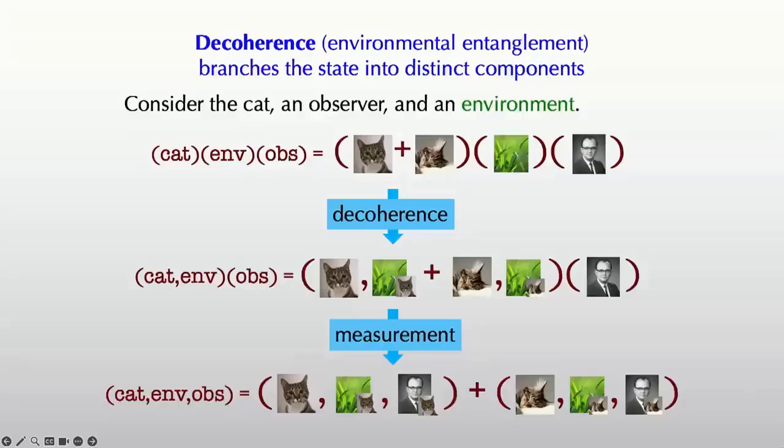And this is the more modern way of thinking about these things by an idea called decoherence. Because think about that cat in the box in a superposition of awake and asleep. There's air in the box. There's light in the box. These parts of the environment are going to interact with the cat long before we open the box. So the environment becomes entangled with the cat. The light particles and the atoms in the box will interact with the cat differently depending on whether the cat is awake or asleep. Because it's literally in a different position in the box.